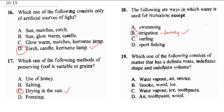Question 19 asks which matter has a definite mass, indefinite shape, and indefinite volume. The answer is gas, because gas takes the shape and volume of its container. Air has no definite volume and no definite shape. Everything in the correct option should be a gas: water vapor is gas, air is gas, and smoke is gas. The correct answer is A. Other options are wrong because they include solids such as wood, ice, or toothpaste.